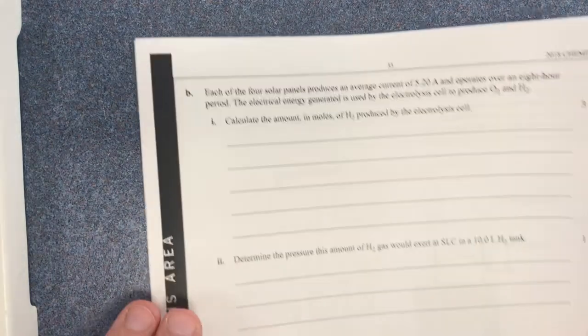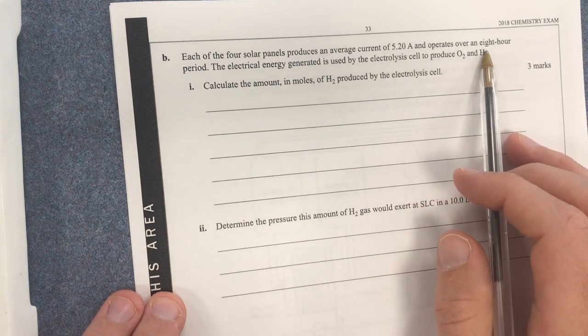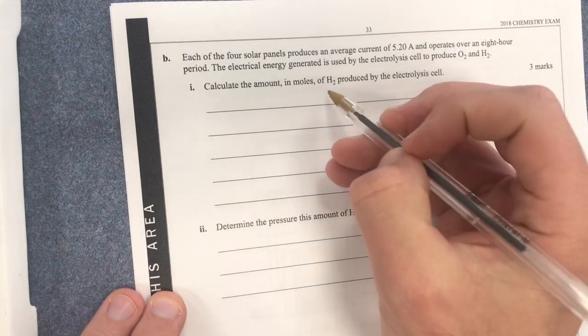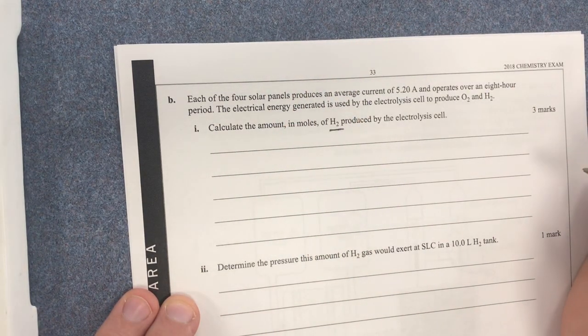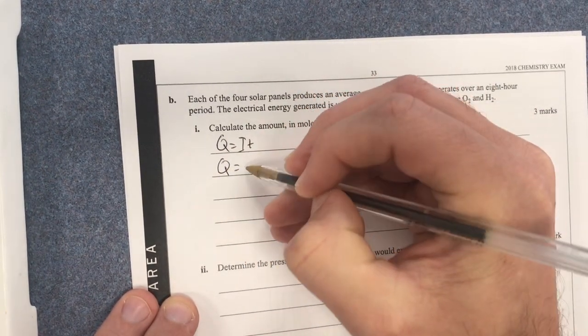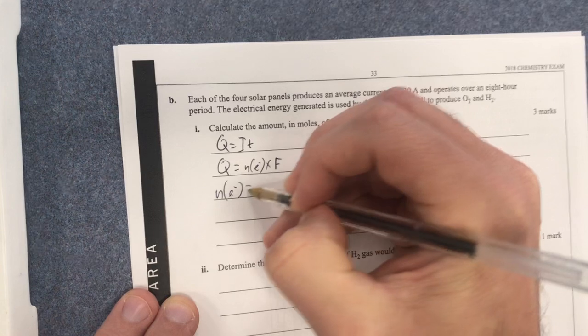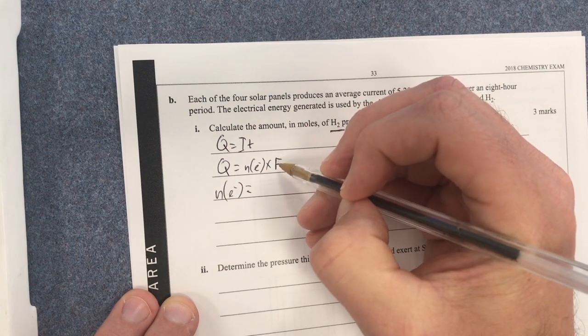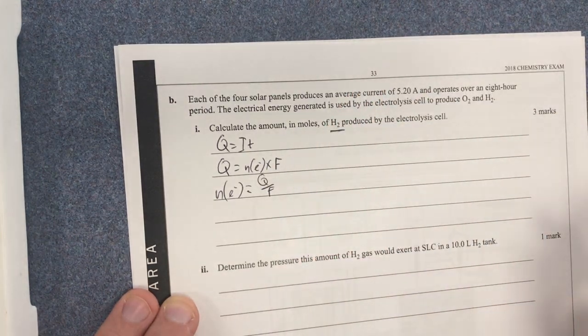Next question is a calculation question. So each of the four solar panels produces an average current of this. Operates over an eight hour period. The electrical energy generated by cell to produce hydrogen. Calculate the amount in mole of hydrogen. So because this is electrochemistry, I need to know the fact that, well, write out my equations. I know Q equals IT and Q also equals number of moles of electrons times F. So therefore my number of moles of electrons equals Q over F.